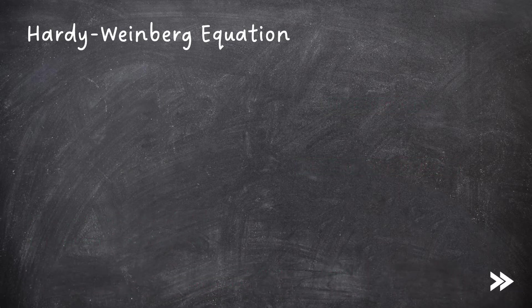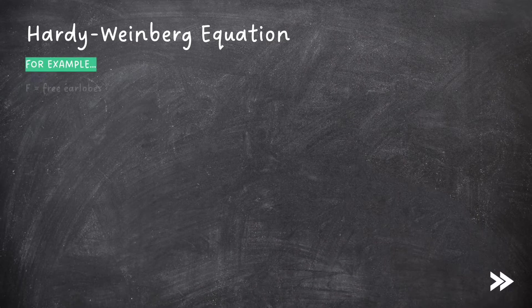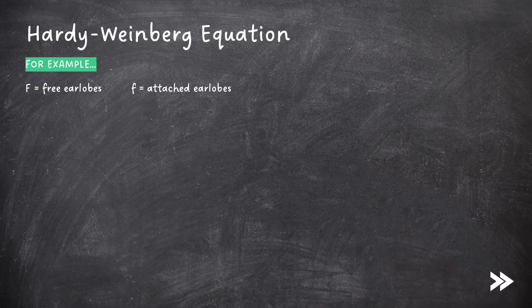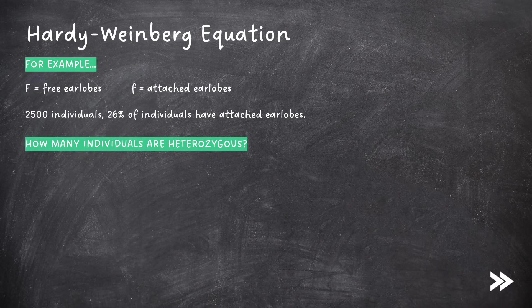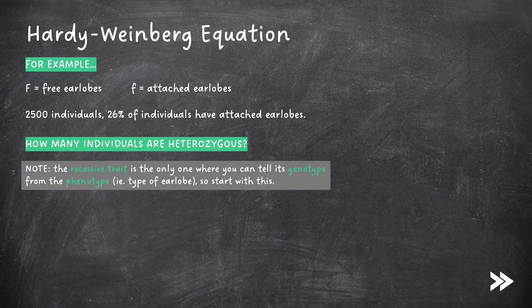Let's have a look at an example question involving the Hardy-Weinberg equation. Gene F codes for type of earlobe. The dominant allele, uppercase F, codes for free earlobes and the recessive allele, lowercase f, codes for attached earlobes. There are 2,500 individuals in a population, 26% of which have attached earlobes. So how many individuals are heterozygous? Note that the recessive trait is the only one where you can tell its genotype from its phenotype, i.e. the type of earlobe.